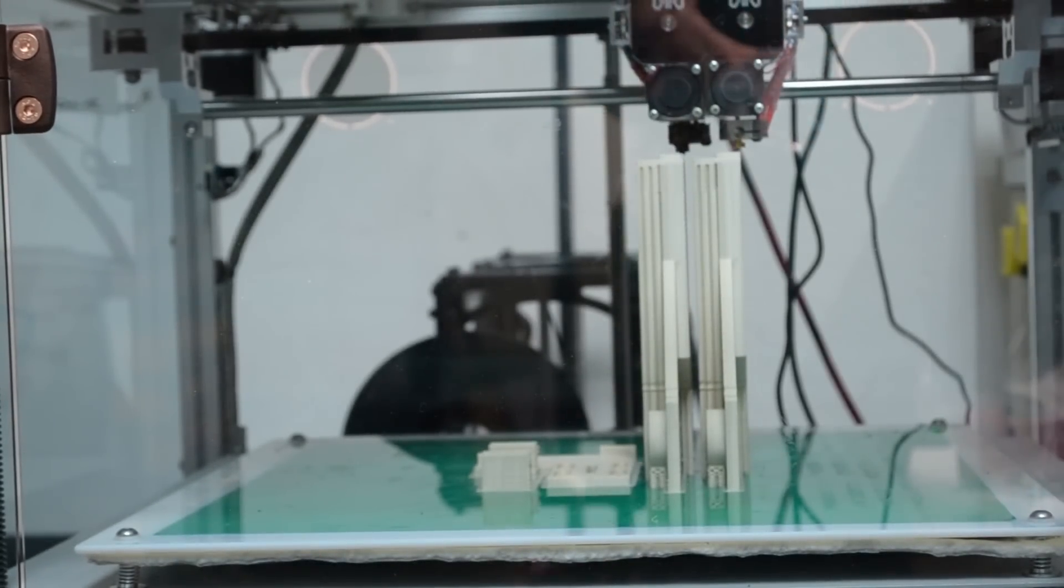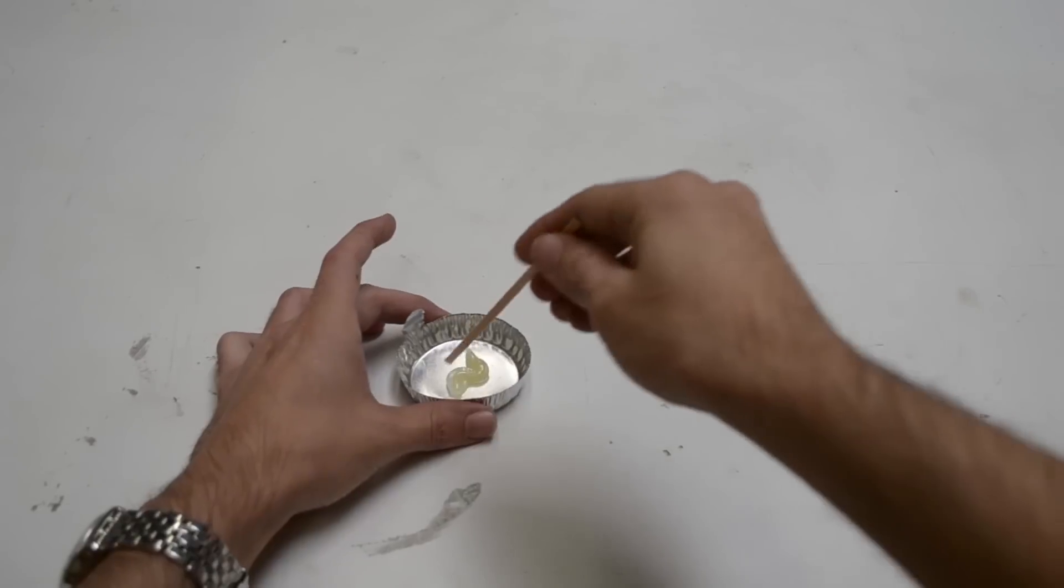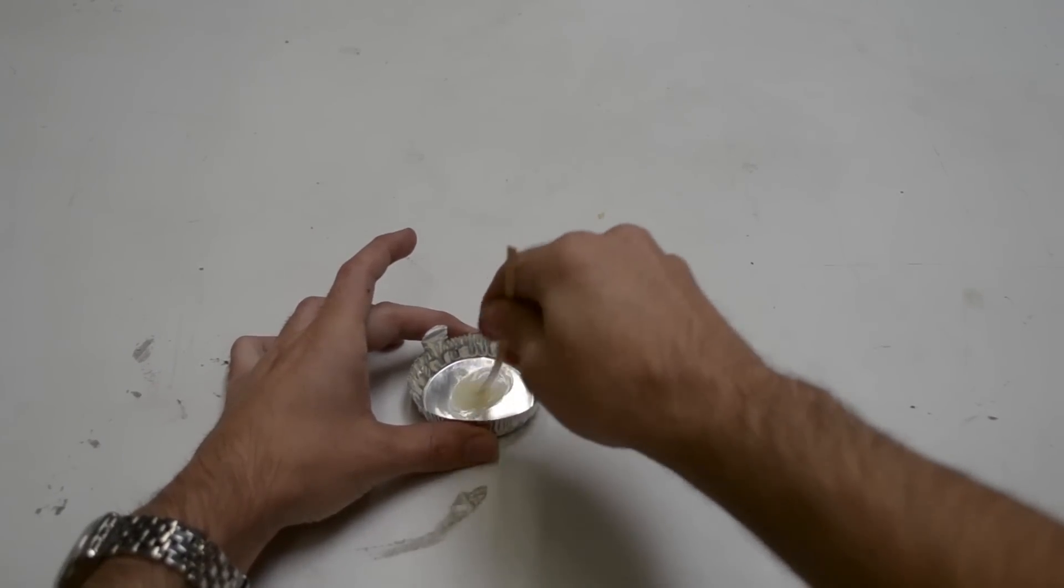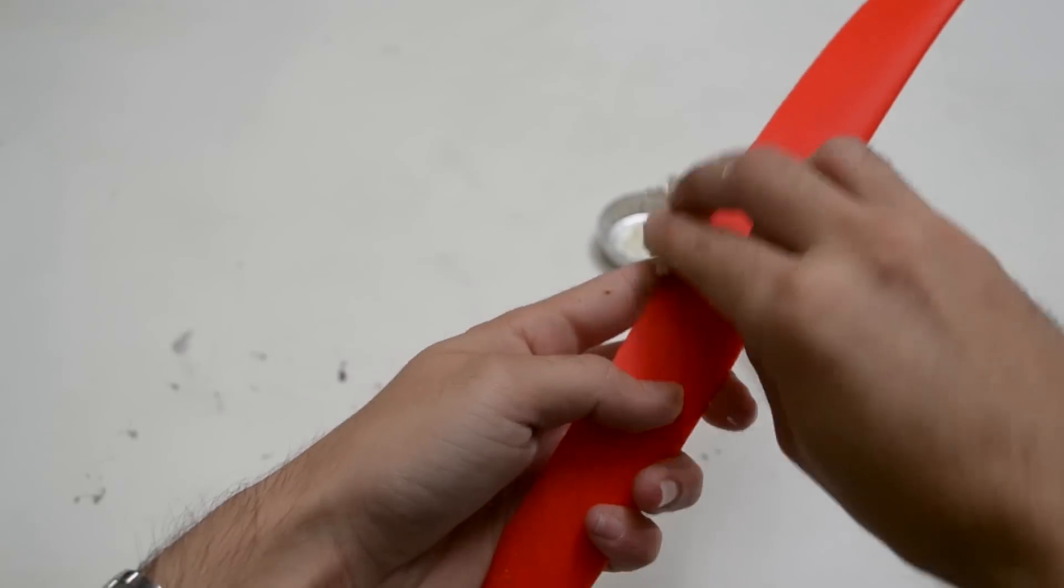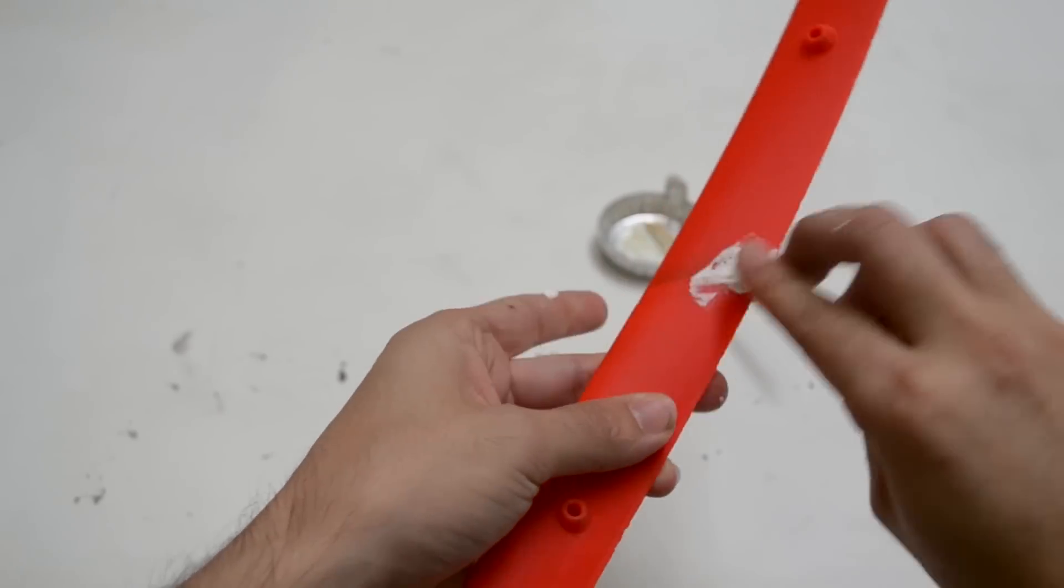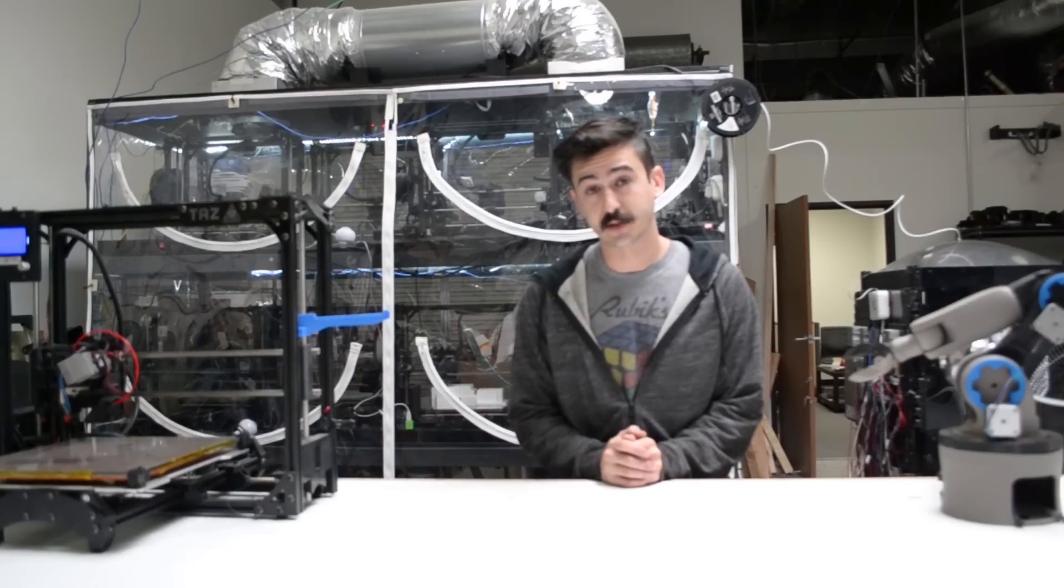We are able to print parts larger than this as long as they can be sectioned up and plastic welded together after printing. We can then bondo and spray paint the parts to make it look as though it is one unit, but it will have an added cost and not be as mechanically strong or accurate as a part printed in one piece.